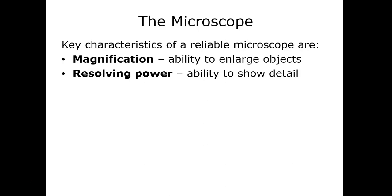Now let's talk about the microscope — one of the most important tools. Two key traits matter: magnification, which is how large we can make an object, and resolving power, or resolution. Light microscopes have much lower total magnifications than electron microscopes, which achieve much higher magnifications.